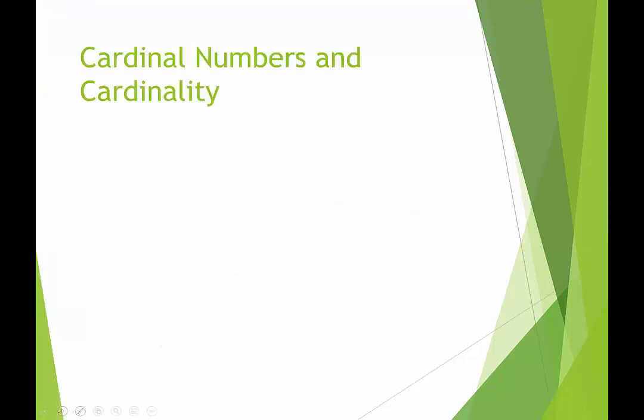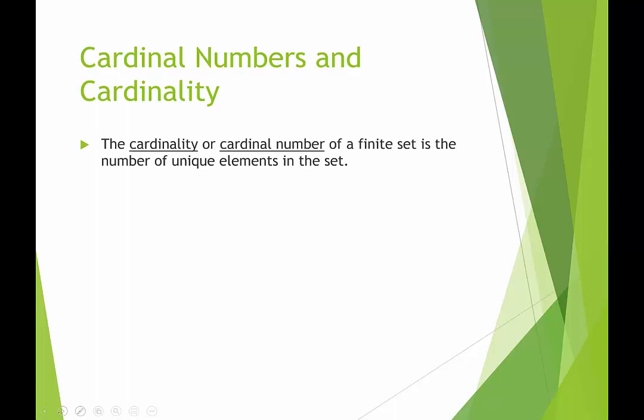There's two ways we can say it. We can say the cardinal number or the cardinality. The cardinal number or the cardinality of a finite set is the unique number of elements in the set. The notation we use looks like function notation, so it's n(A), where A is a set. If we see n of set A, that's asking us how many elements are there in set A.